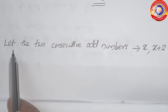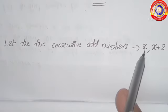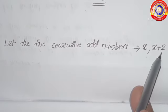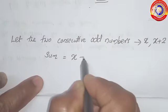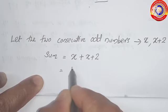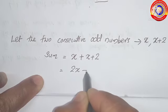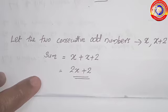Next question: add two consecutive odd numbers and subtract the even number in their middle. Let the two consecutive odd numbers be x and x plus 2. The sum of these two numbers is x plus x plus 2, which equals 2x plus 2. Then we subtract the even number from this sum.